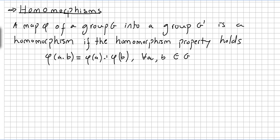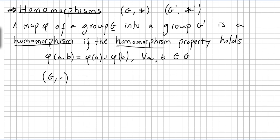This is the very first video about a new chapter about homomorphisms. A map phi of a group G into a group G prime — G under an operation and G prime under an operation prime — is a homomorphism if the homomorphism property holds: phi(a · b) = phi(a) ·' phi(b) for all a and b in G.